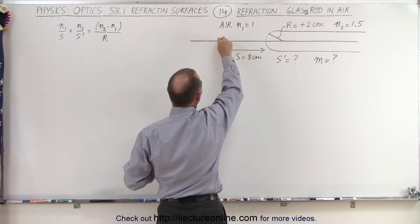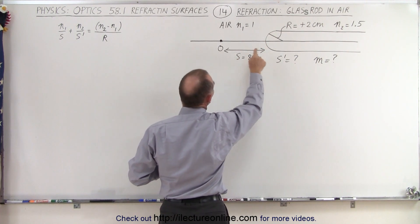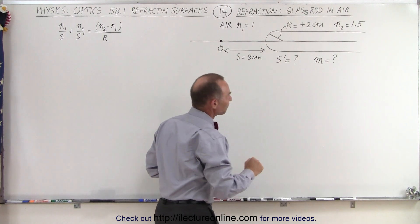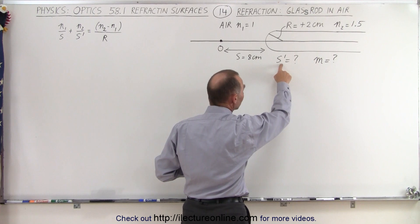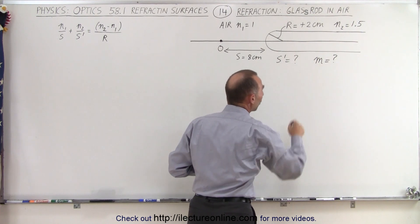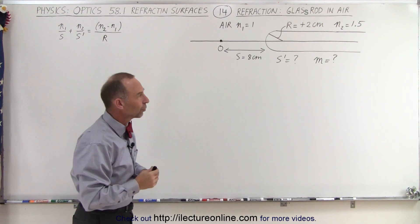And notice that the object is basically a point object, a distance of 8 centimeters away from the boundary. We're going to first of all find out where the image is going to be located, and secondly, what the magnification of that is going to be.